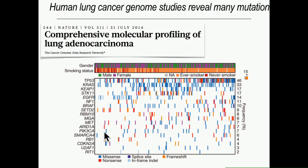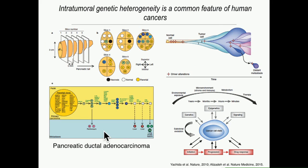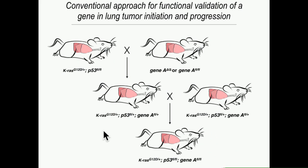There's tremendous inter-tumoral heterogeneity. And from the work of Bert Vogelstein's group, Charlie Swanton's group, and many others, we also know there's tremendous intra-tumoral heterogeneity — the genotype of a tumor in one sector is likely different from another sector, and literally two cells sitting side by side may have a different constellation of mutations. This makes the job of mouse modelers much more challenging, because functionally validating every one of those genes using germline models will take a very long time.